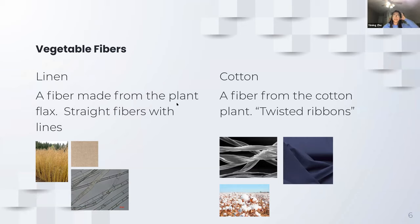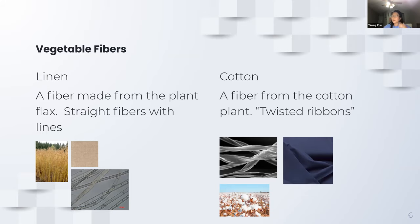Okay, so linen fibers are mostly straight with little notches in them, and then cotton — I would describe it like twisted ribbons. If you had a thin one-inch by ten-inch piece of paper and twisted it up, it would kind of look like that.